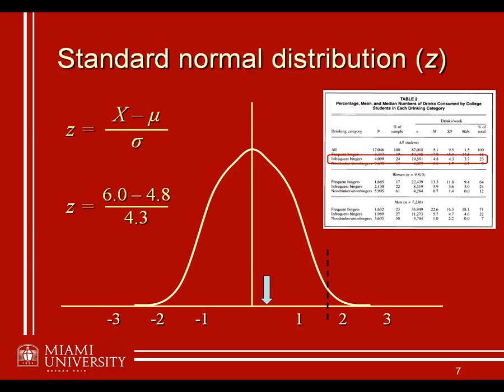But it doesn't seem to be an extreme amount. In other words, 6 drinks isn't one of the most extreme values that we would expect to find on this distribution. So if we meet somebody who drinks 6 drinks a week, we would say it's probably very likely that this person is an infrequent binge drinker, because that's the population we're looking at here.